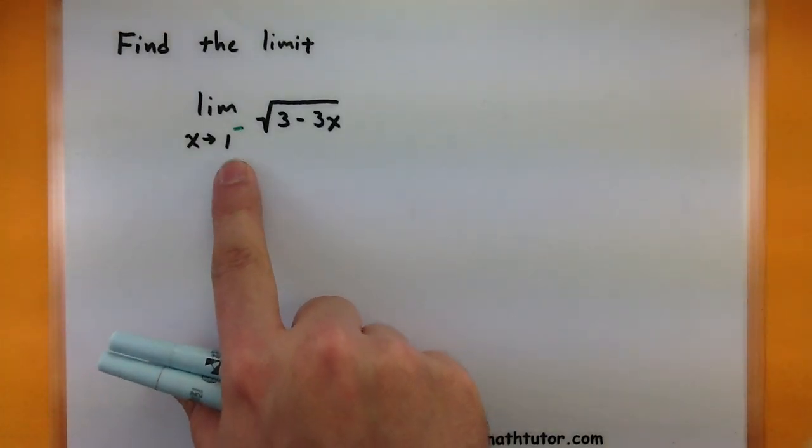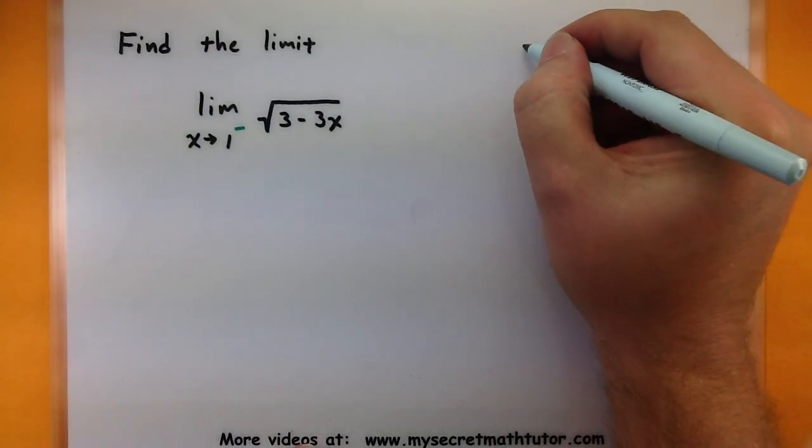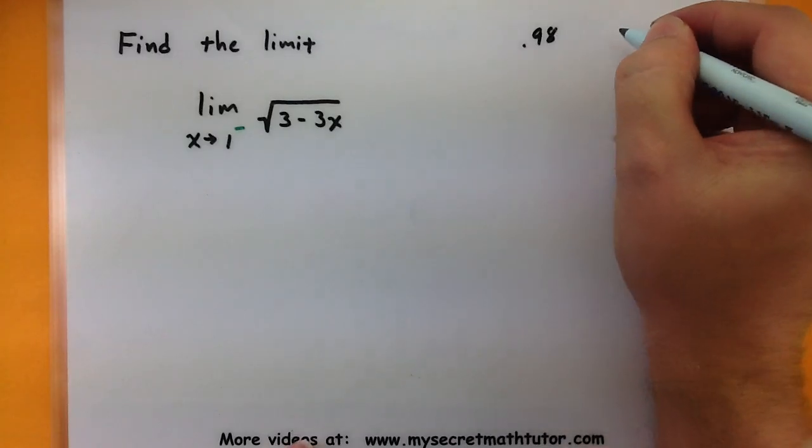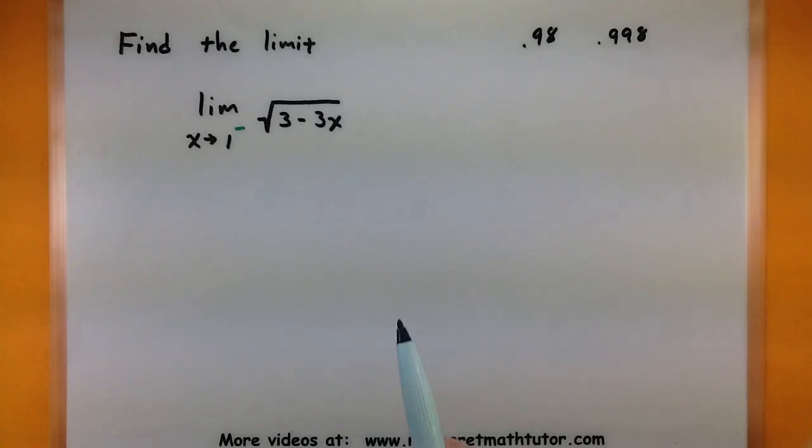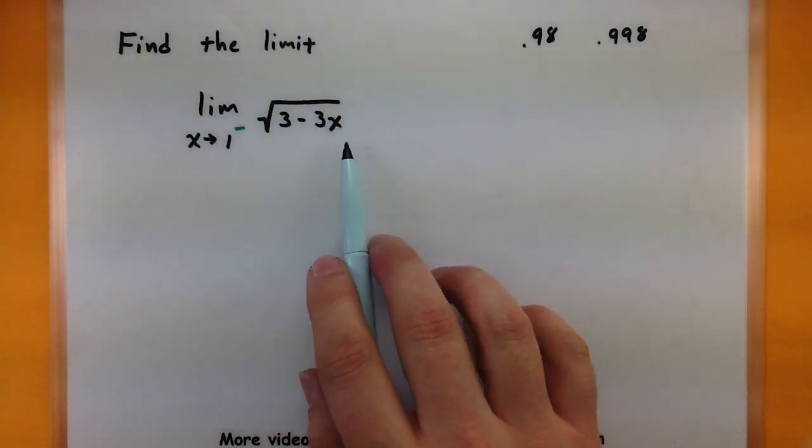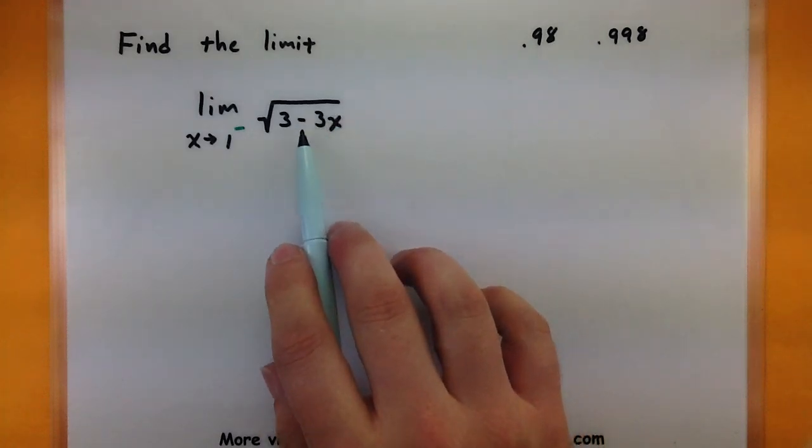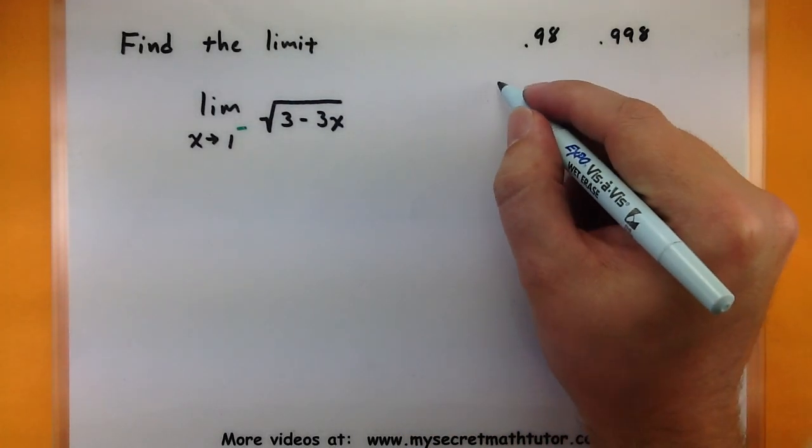So the values we're approaching, as we're getting really close to this one from the left side, are values like 0.98 would be a good value, maybe something like 0.998, something really close. And if you were to substitute those in for your x value, you would actually be able to get a number. 3 minus something really close to a 3, that would be a little bit smaller. But watch what happens if you try and pick things from the right side.